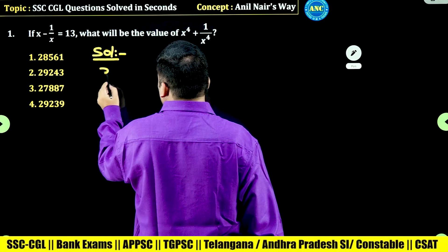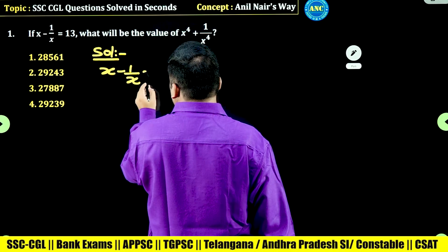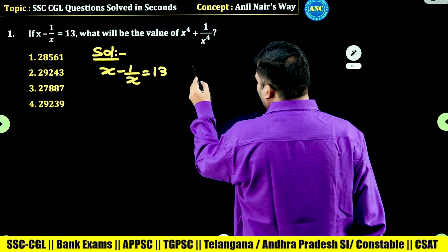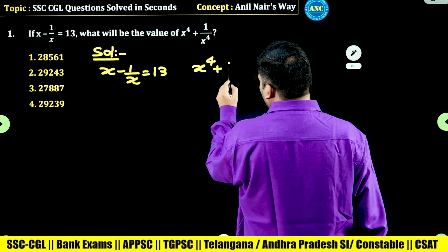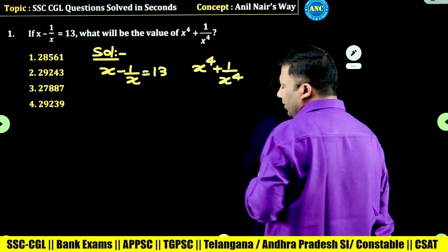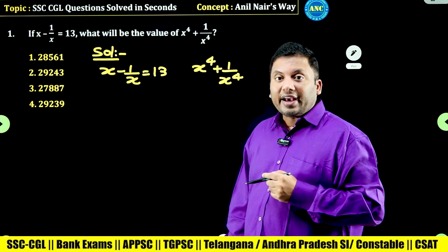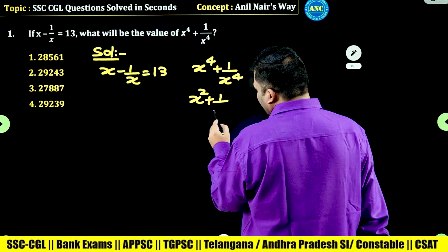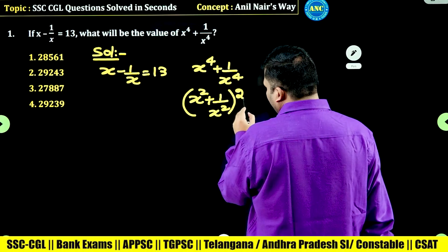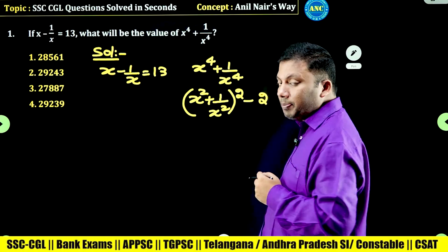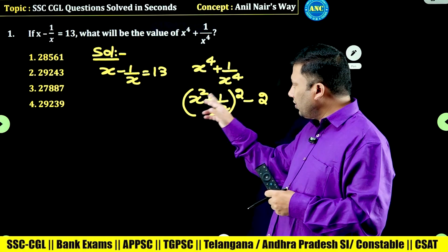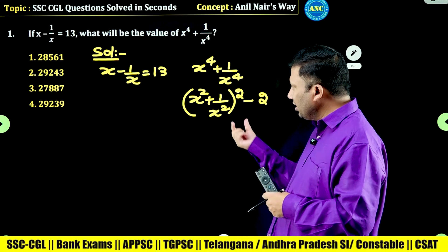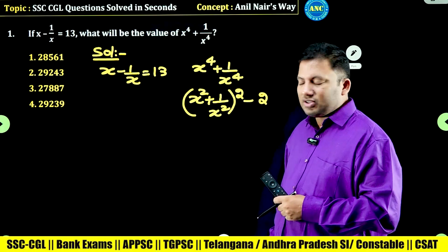What is given in the question: x minus 1 by x is equivalent to 13. What is asked in the question: x power 4 plus 1 by x power 4. This expression x⁴ + 1/x⁴ can be written as (x² + 1/x²)² minus 2. That is, a plus b whole square minus 2, which gives a² + b² + 2ab, and the plus 2 minus 2 cancels. That means I require x² + 1/x².